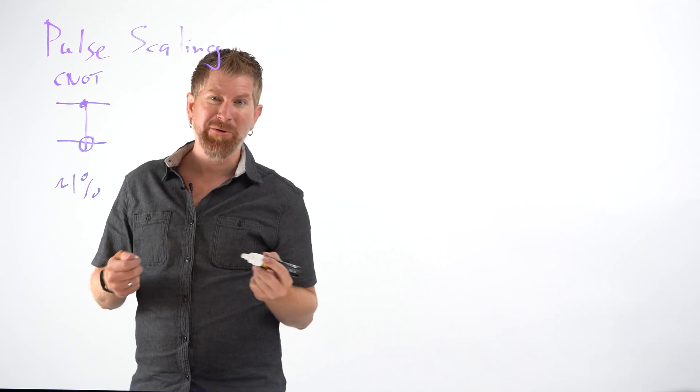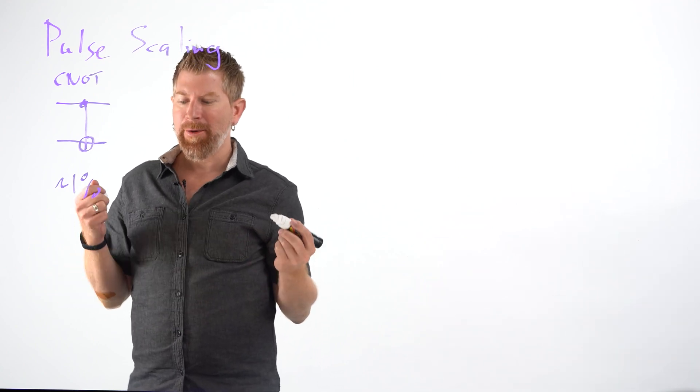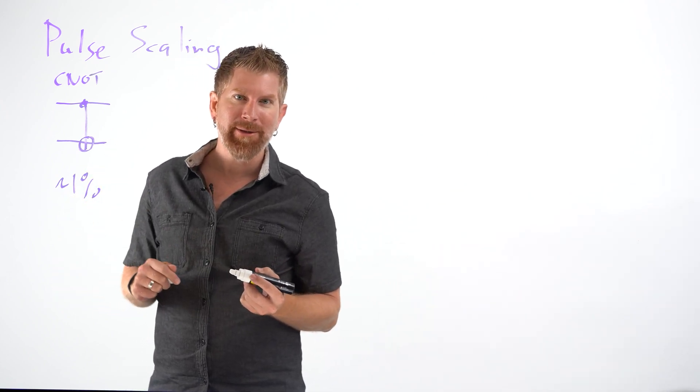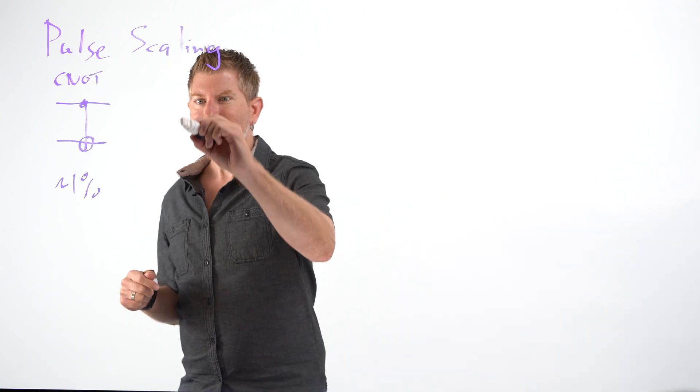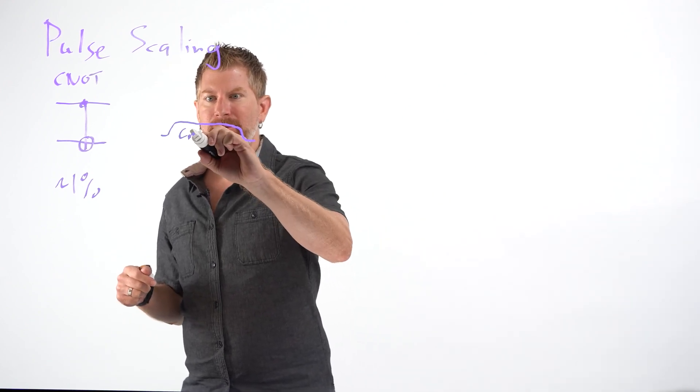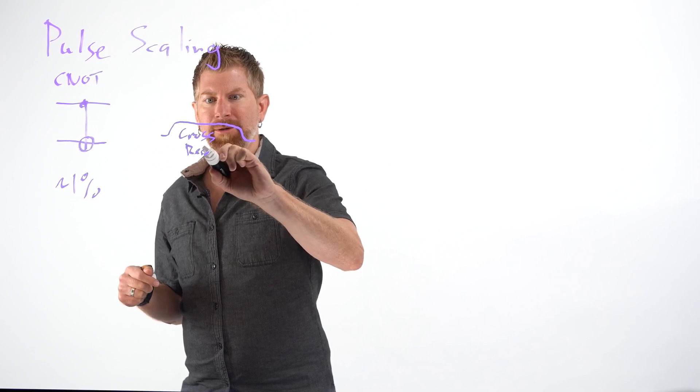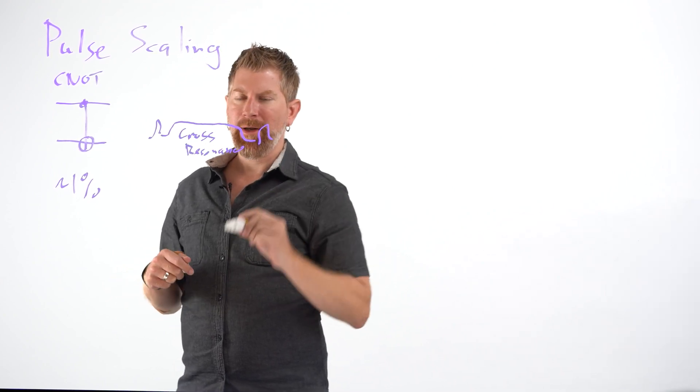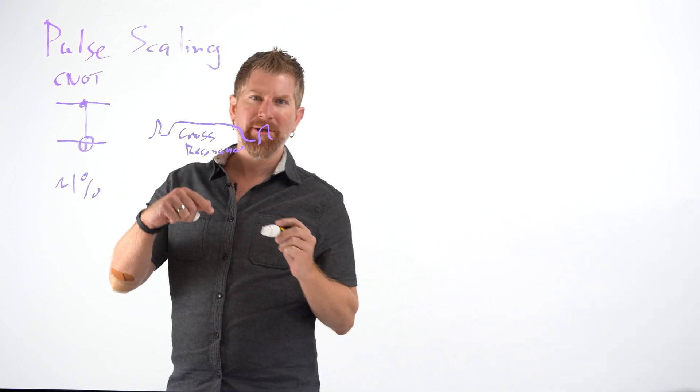With pulse scaling though, we're going to reduce the amount of it. And by that, I mean this CNOT is actually represented on superconducting qubits with microwave pulses. Something that looks like this long pulse here, called a cross resonance pulse that does our entangling, and then some single qubit gates, maybe before, maybe after, that are relatively efficient.